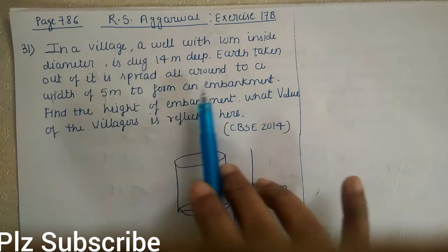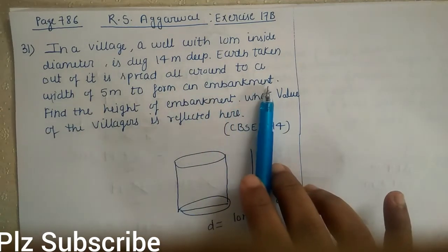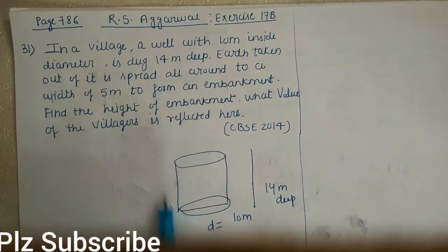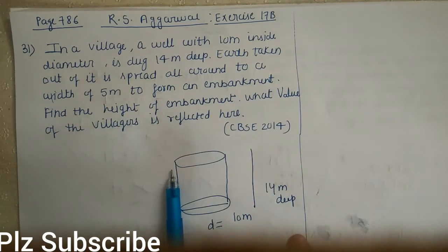The embankment is the wall around the well. The width of the embankment is 5 meter.